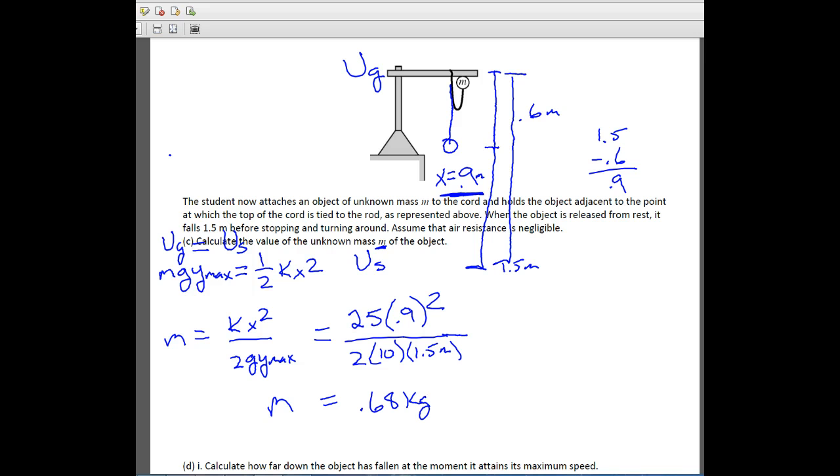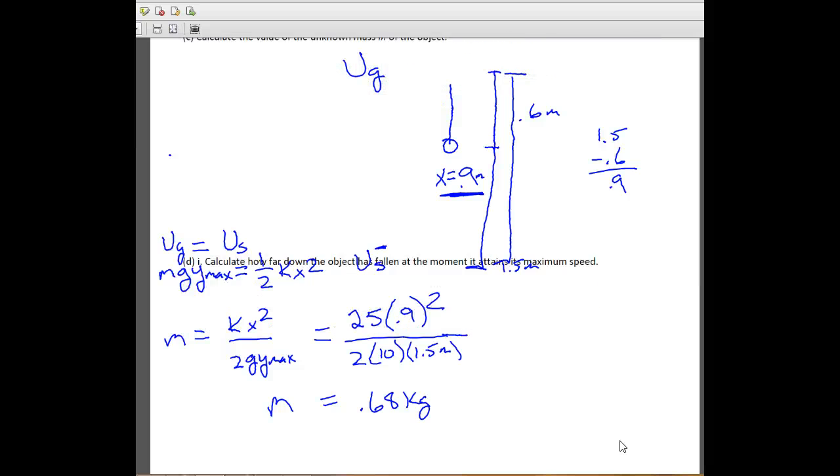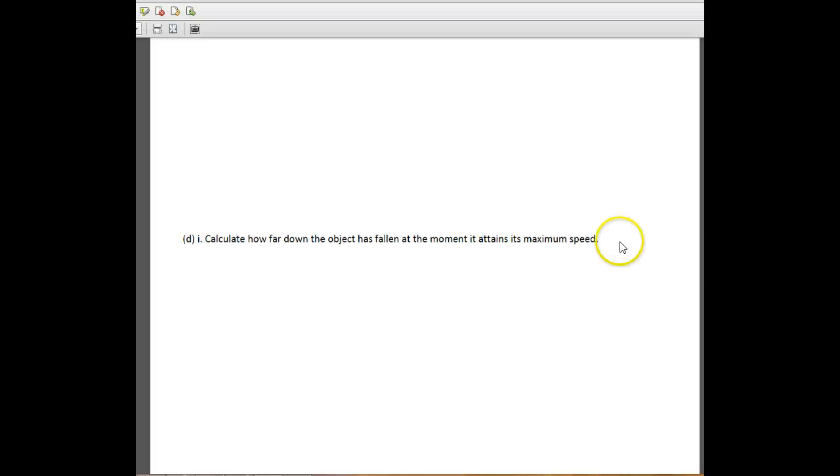Next thing they want us to do here is they want us to figure out the next part, how far down the object has fallen at the moment it attains maximum speed. So this is a little bit harder to do because we can't really think about that setup. So we've got the setup with the bar, we've got this little table thing here. We've got the pole coming up attached to it, and then the ball falls down, and then it gets to the bottom once it stretches. So we're trying to figure out where is the maximum speed.